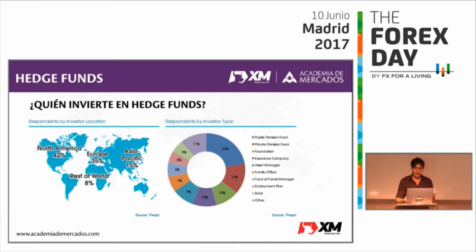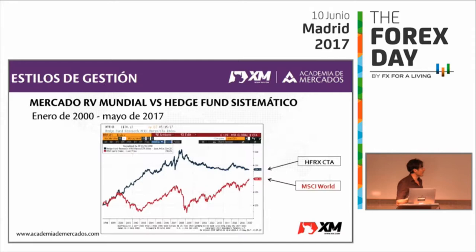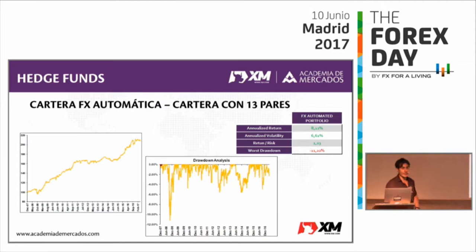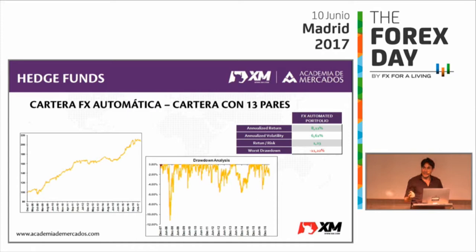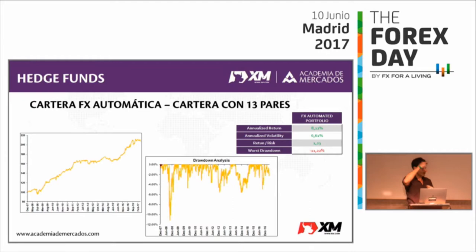Este es un ejemplo de una cartera real de divisa que utiliza 13 cruces de divisa automatizada. Se basa en una estrategia intradiaria contrarian que busca captar una pequeña parte del movimiento intradiario. El mercado abre, tiene su open, high, low, close, tendrá un movimiento intradiario. Esta estrategia intenta captar un poquito ese movimiento. Se puede programar: si el mercado se ha movido tanto hacia arriba o hacia abajo, al día siguiente compras o vendes con un profit taking o un stop loss.